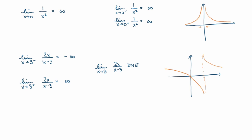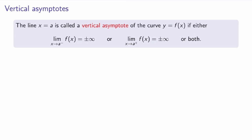I keep drawing these little vertical dashed lines in my graphs — those are called vertical asymptotes. The line x = a is called the vertical asymptote of the curve y = f(x) if either the left-sided limit or the right-sided limit goes to plus or minus infinity, or both. It's important to note that the function does not have to blow up on both sides — as long as it blows up on one side, we call it a vertical asymptote.